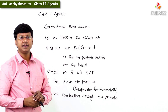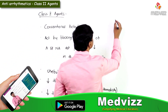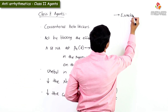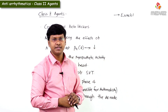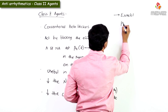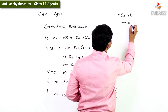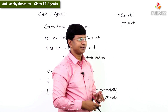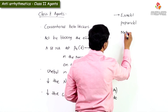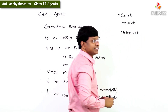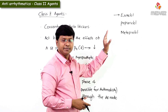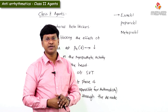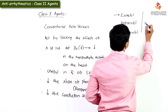Now let me tell you the examples of the important beta blockers used as anti-arrhythmic agents. Number one, we have esmolol; next, we have propranolol; and after that, we have metoprolol. So esmolol, propranolol, and metoprolol are the important beta blockers used as anti-arrhythmic agents.